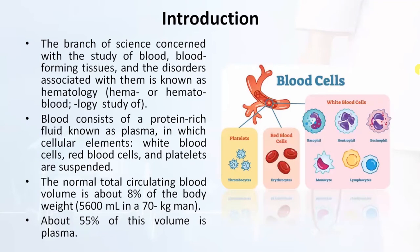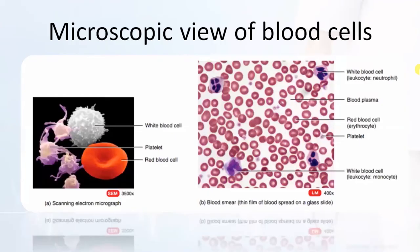The normal total circulatory blood volume is about 8% of body weight — 5600 ml in a 70 kg man — and about 55% of this volume is plasma. White blood cells include basophils, eosinophils, neutrophils, monocytes, and lymphocytes. Neutrophils and monocytes are basically involved in the phagocytosis process.